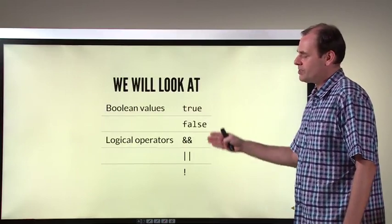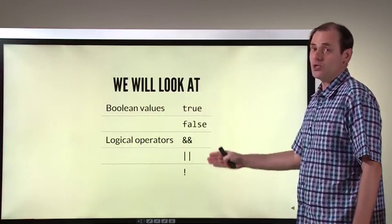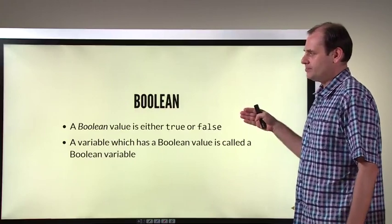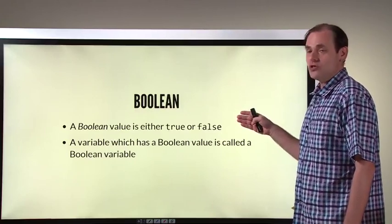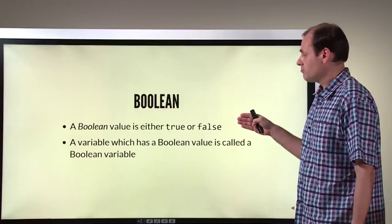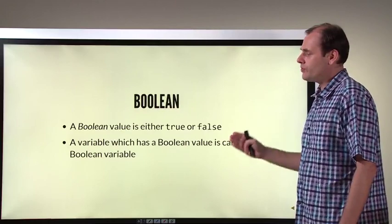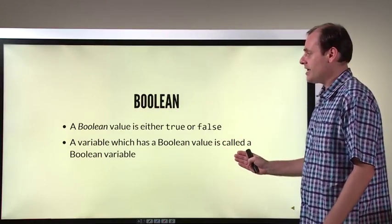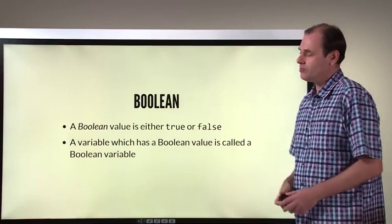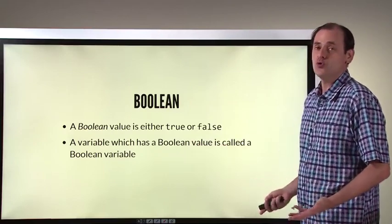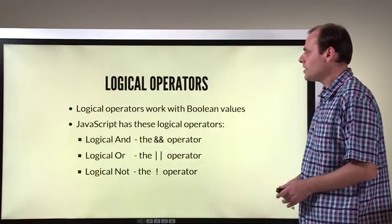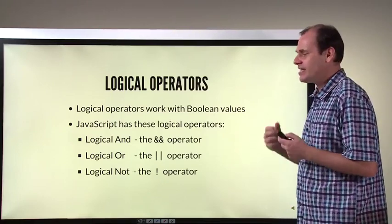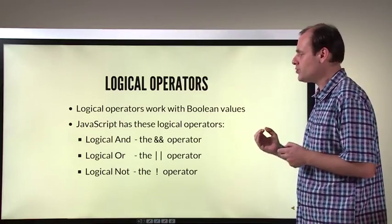These are the different bits of JavaScript we're going to look at. Boolean basically means true or false. If you have a variable which has a Boolean value, that is a Boolean variable — it either has true or false. What about manipulating and checking, testing these true or false values?